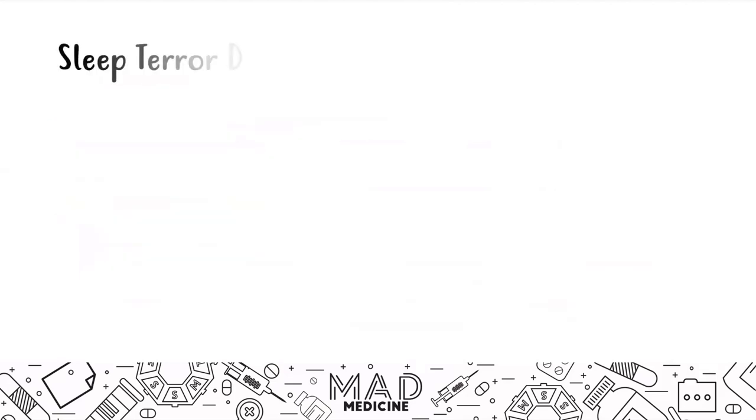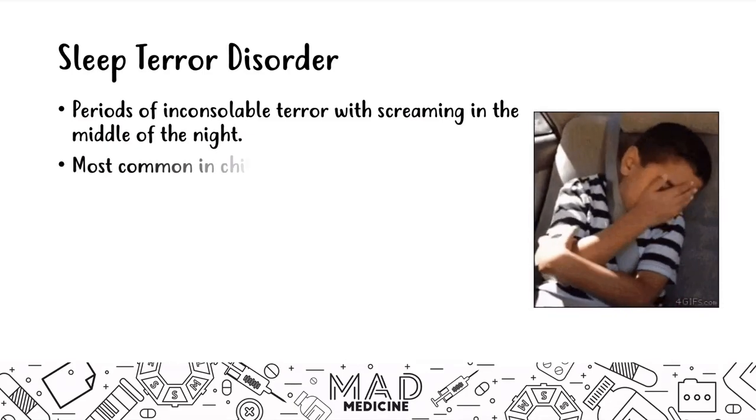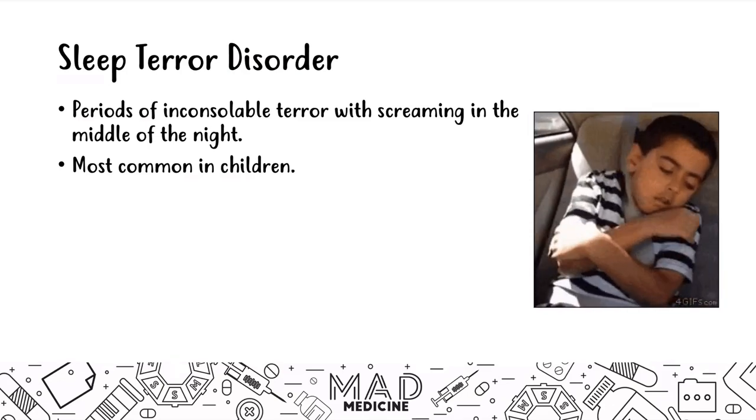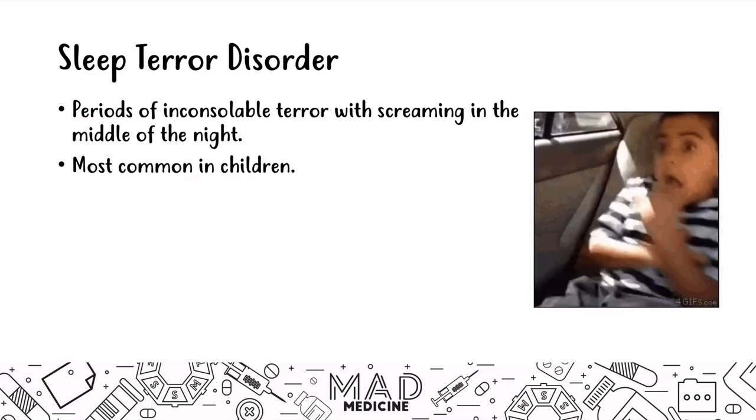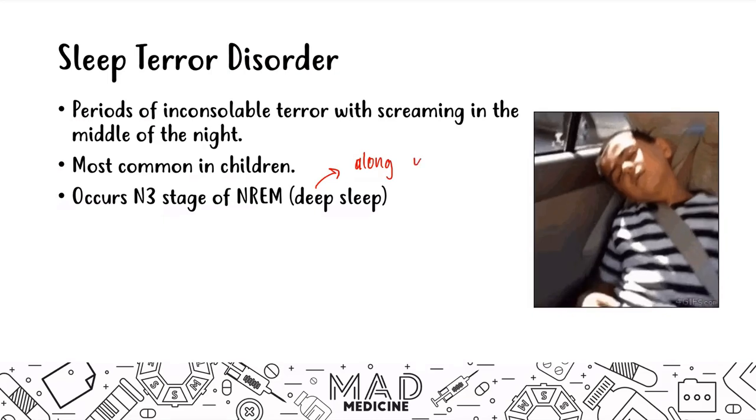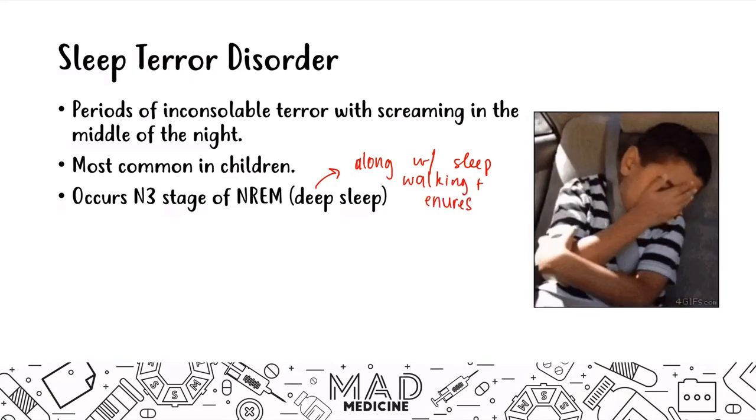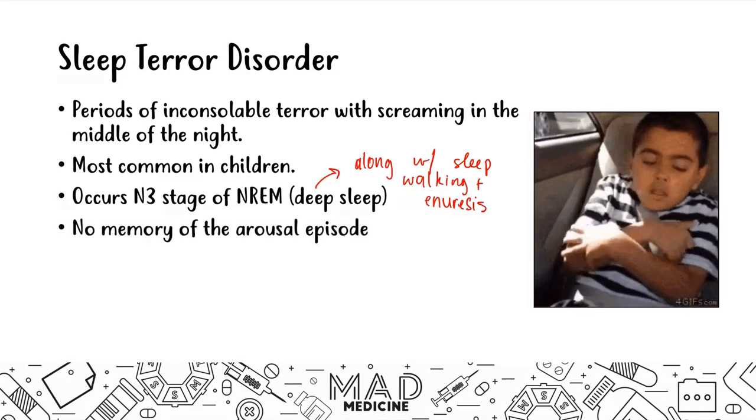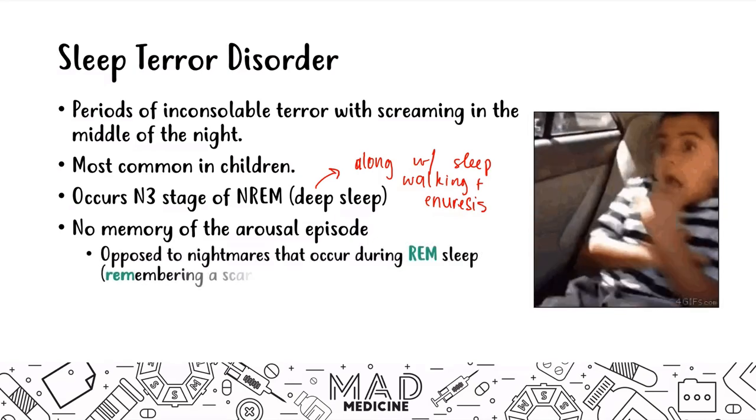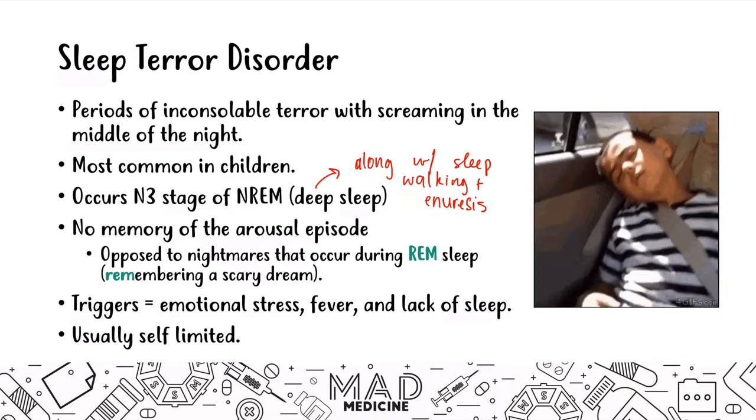After narcolepsy, we're going to talk about sleep terror disorder. In this disorder, patients have periods of inconsolable terror with screaming that happens all of a sudden. This is most common in children and occurs in N3 stage of NREM, the deep sleep, along with sleepwalking and enuresis. Patients have no memory of the arousal episode. They'll wake up screaming hysterically but won't remember what happened, as opposed to nightmares which occur in REM sleep where they remember the scary dream. Triggers can be emotional distress, fevers, lack of sleep, and this is usually self-limiting.